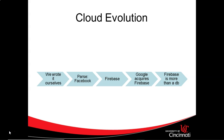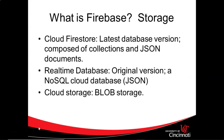So when you think Firebase, any of these things can come to mind, but many times storage is what comes to mind. We have Cloud Firestore, which is the latest database version. It's composed of collections and JSON documents, and that's what we're going to be demonstrating in our example. It has several benefits, like the ability to specify a location, shards, queryability. The previous version was called Firebase Realtime Database — essentially a NoSQL database that stored JSON objects. Since Cloud Firestore is the newest version with additional features, that's what we're going to use.